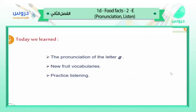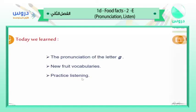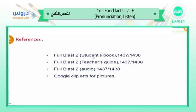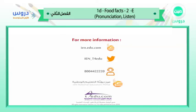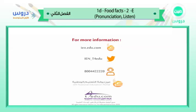So today we learned: first, the pronunciation of the letter G — we can pronounce it 'ja' in some words and 'ga' in others. Second, new fruit vocabularies. Third, practice listening. Those are the references used today: student book, teacher's guide, audio, and Google clips. Thank you very much for being with me — I hope to see you next time. Goodbye everyone.